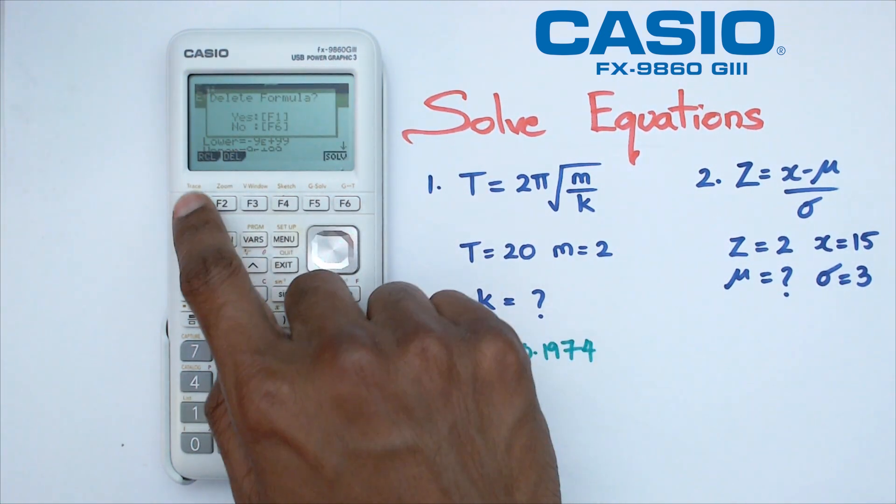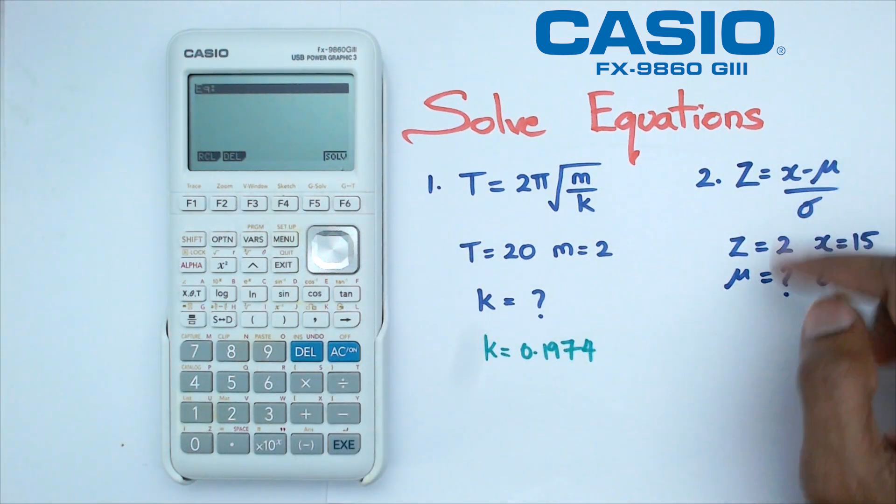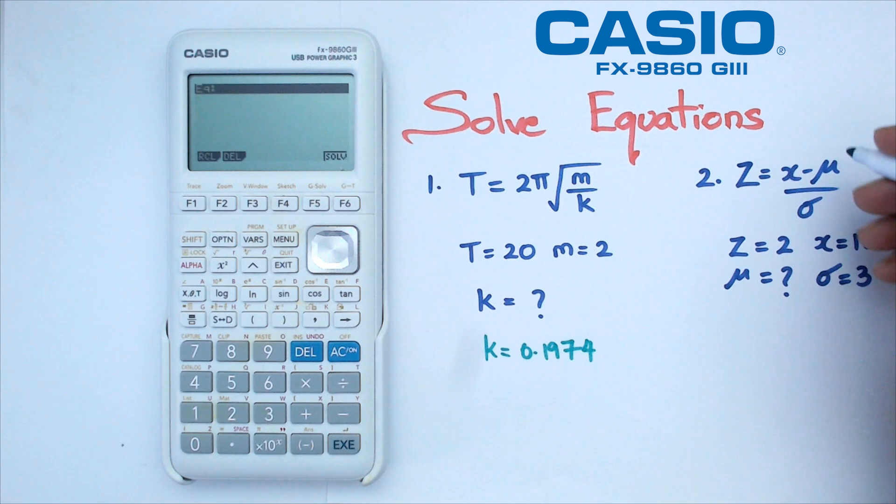I'm going to delete this formula, and then I'm going to put my new formula. In this particular case, I've actually got symbols. What I'm going to do is replace this symbol as m, which is the mean, and then I've got sigma here. I'm going to put down S for that particular symbol there.